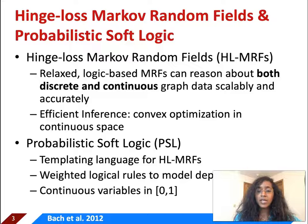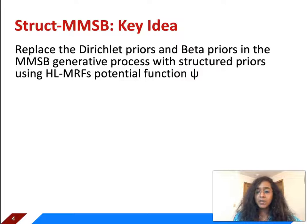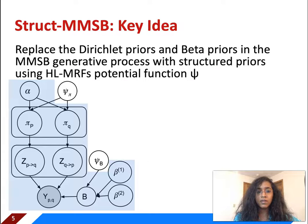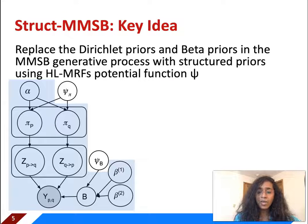The key idea behind Struct-MMSB is to replace the Dirichlet priors and the Beta priors in the MMSB generative process with structured priors from HLMRF potential functions. The potentials are represented as psi in this plate diagram for MMSB. The blue box going around the plate diagram represents the original MMSB generative process, and we add the structured priors psi_pi and psi_b to this generative process.